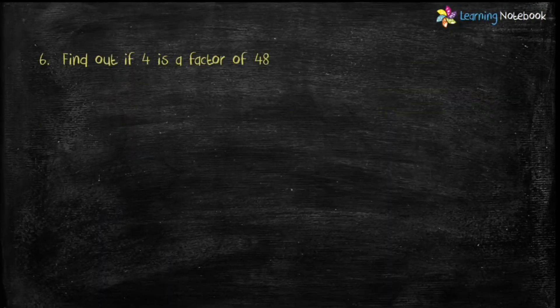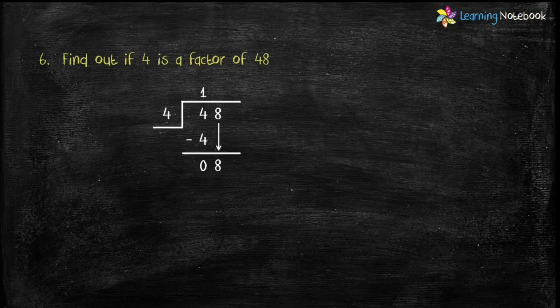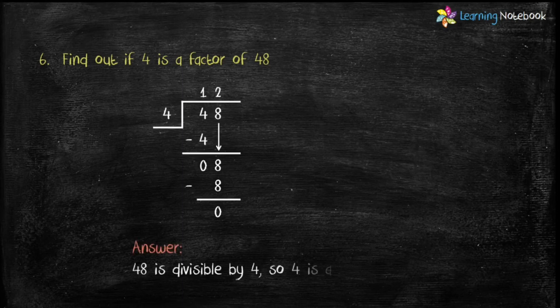Next question: find out if 4 is a factor of 48. To check, divide 48 by 4. If the remainder is 0, then 4 is a factor of 48. Dividing: 4 × 12 = 48, remainder is 0. Therefore, since 48 is divisible by 4, 4 is a factor of 48.